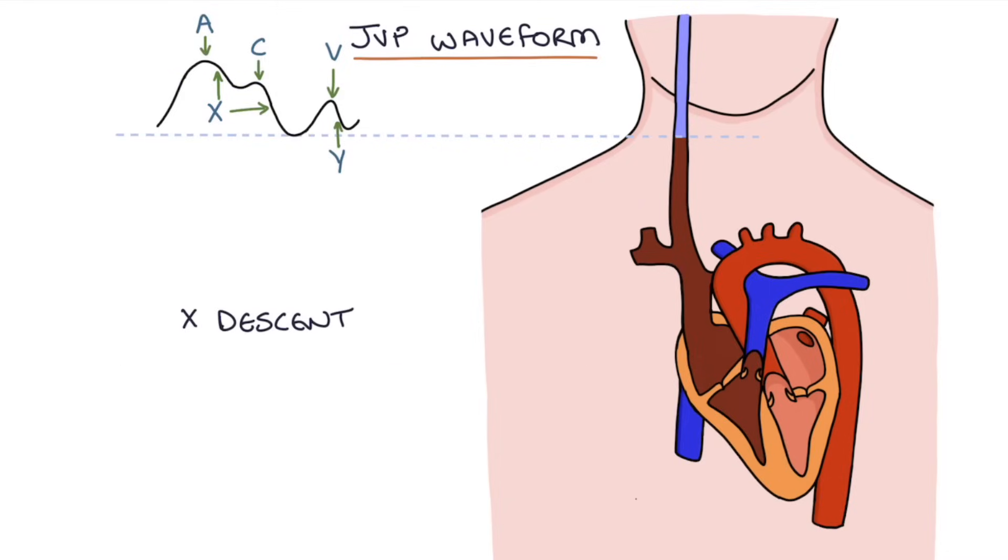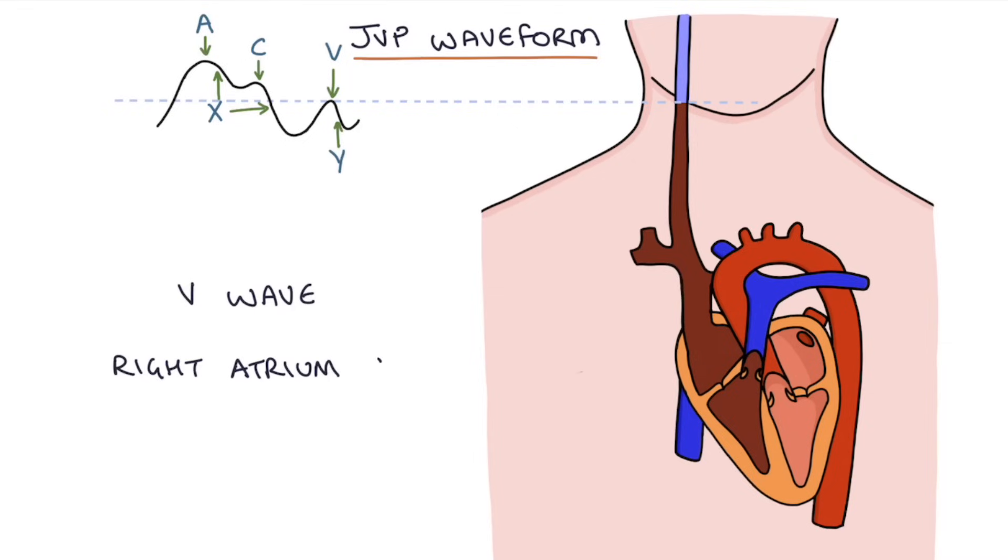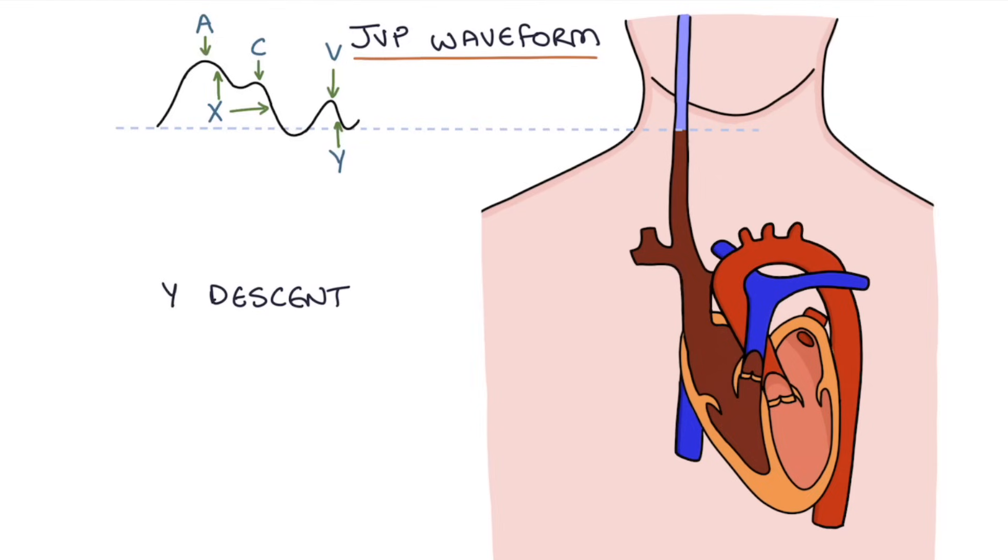The remaining X descent is caused by right ventricle contraction causing the right ventricles to take up less room and the atria to expand and fill the space left by the right ventricle and drain blood from the internal jugular vein. The V wave is caused by the right atrium filling up with blood and in turn the superior vena cava and internal jugular vein filling with blood. And then the Y descent is caused by opening of the tricuspid valve and emptying of the right atrium.